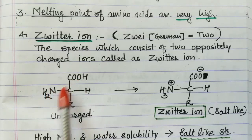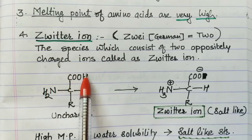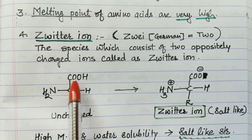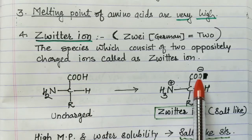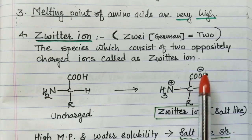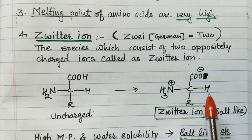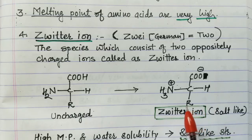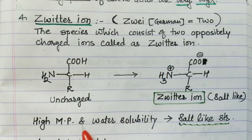The amino group picks up the proton from the carboxylic acid group, forming NH3+ and a carboxylate ion (COO−). This species with two oppositely charged ions — positive and negative — is a zwitterion, also called a salt-like structure. Generally, salts have very high melting points and water solubility, and that is why amino acids show water solubility as well as high melting point.